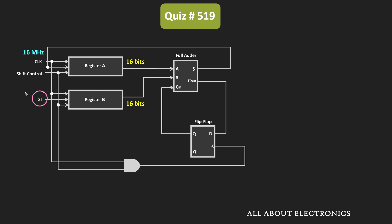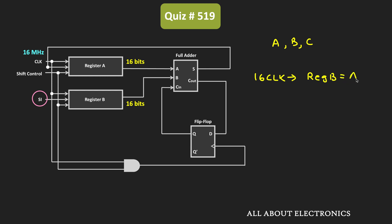When we want to perform the addition, we make the shift control input high. Let's say the three numbers are A, B, and C. Initially, number A will be fed into register B. After 16 clock pulses, the entire number A will get shifted into register B. So after 16 clock pulses, the content of register B is equal to A.